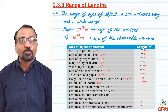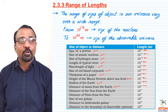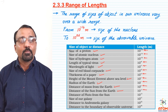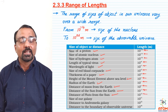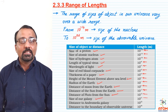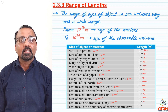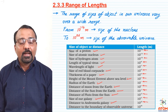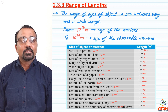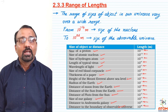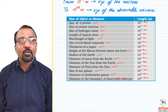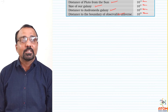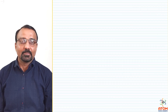The radius of Earth is 10 raise to plus 7 meter. The distance of the Moon from Earth is 10 raise to 8 meter. The distance of the Sun from Earth is 10 raise to 11 meter. The distance of Pluto from the Sun is 10 raise to 13 meter. The size of our galaxy is 10 raise to 21, the distance of the Andromeda galaxy is 10 raise to 22, and the distance to the boundary of the observable universe is 10 raise to 26 meter.